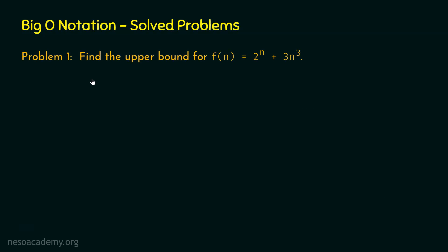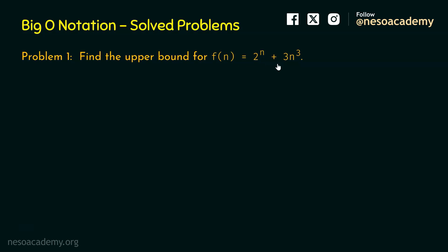Problem number 1 is: find the upper bound for F(n) equal to 2 to the power n plus 3n cubed. We need to apply the three-step method which we learned in our previous presentations. Let's apply the three-step method here to solve this problem.